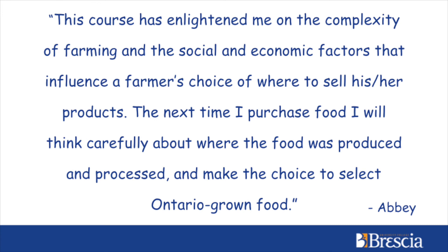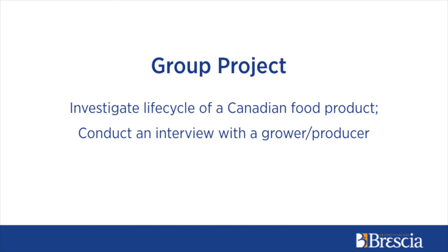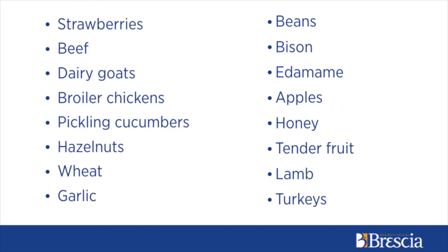Another teaching strategy involved asking the students to investigate the life cycle of a Canadian food product, and they had to conduct an interview with a grower or producer of that product. We had interviewees for 16 food products: strawberries, beef, dairy goats, broiler chickens, pickling cucumbers, hazelnuts, wheat, garlic, beans, bison, edamame, apples, honey, tender fruit, lamb, and turkeys.